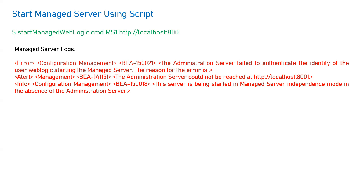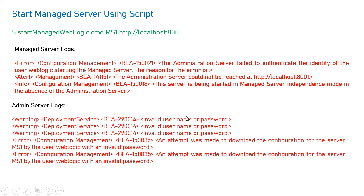Because the username/password has changed, this particular boot.properties file — referred to when you restart your managed server with the help of a script — still has the old password. So the managed server is not able to contact the admin server and starts in independent (MSI) mode, using local cache configurations without contacting the admin server. When you check the admin server log, it will show: "Invalid username or password — an attempt was made to download the configuration for server MS1 by user weblogic with an invalid password."